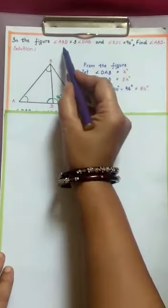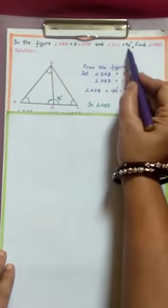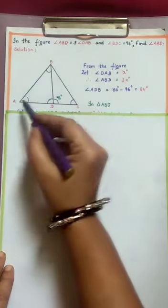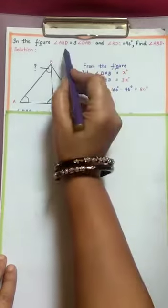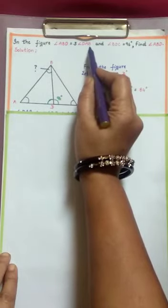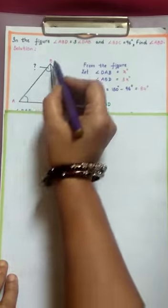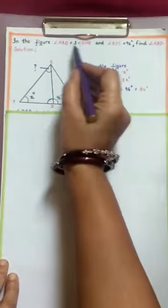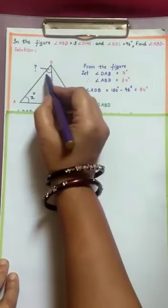In triangle ABC, angle ABD is equal to 3 times angle DAB and angle BDC is 96 degrees. You need to find angle ABD. We don't know any other angles, but the relation given is angle ABD equals 3 times angle DAB. Let us take angle DAB as X degrees. From this relation, angle ABD is 3 times X, which is 3X degrees.